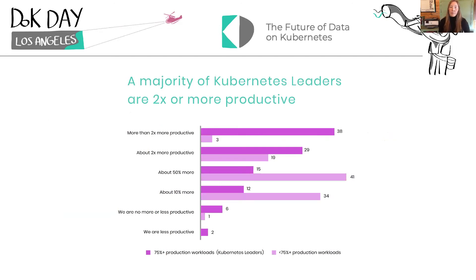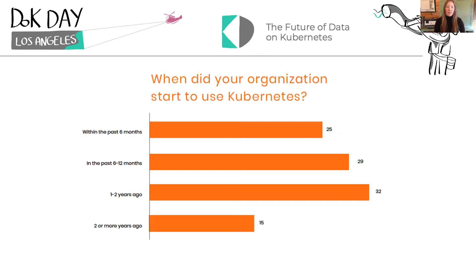We also took a look at what we call Kubernetes leaders throughout the survey — a cohort of people who have 75% or more of their workloads on Kubernetes, a huge amount. When we look at this cohort, the Kubernetes leaders show even greater levels of productivity, with most being two times or more productive. This is the long-term promise of Kubernetes being realized in a big way. It's also notable that this adoption is fairly recent, with over half adopting in just the past 12 months, as the pandemic has fueled these fast transformations.